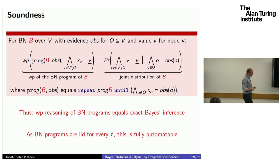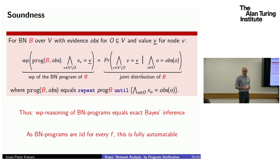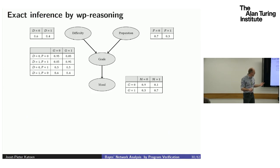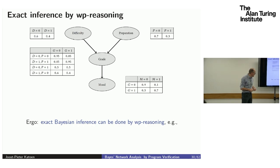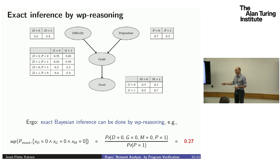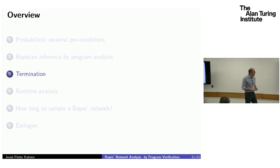Since all BN programs are IID, everything almost surely terminates, and WP reasoning equals Bayesian inference. This can be fully automated because you get a closed-form formula. Applying WP reasoning to the student BN program gives exactly 0.27.